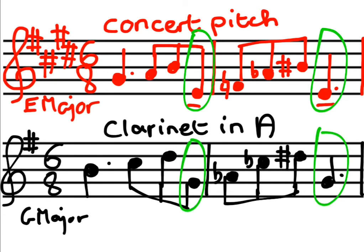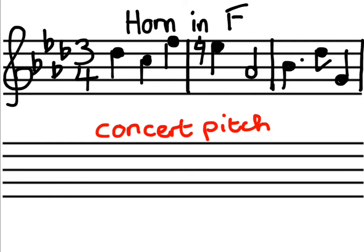The music in black is what the instrument plays, but the music in red is what the instrument sounds like. Now we'll look at transposing music up and down a perfect fifth, which works for instruments in F. Here we can see a piece of music written for the horn in F, and we have to write this music a perfect fifth lower so that it will sound at concert pitch — to figure out what actual sounds come out of the horn. The black part is what's written for the horn.